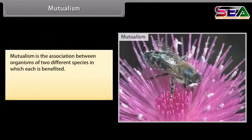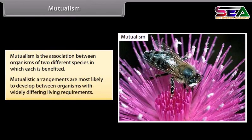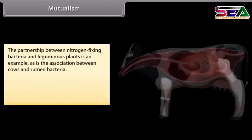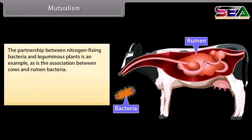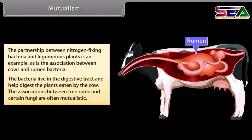Mutualism is the association between organisms of two different species in which each is benefited. Mutualistic arrangements are most likely to develop between organisms with widely differing living requirements. The partnership between nitrogen-fixing bacteria and leguminous plants is an example, as is the association between cows and rumen bacteria — the bacteria live in the digestive tract and help digest the plants eaten by the cow. The associations between tree roots and certain fungi are often mutualistic.